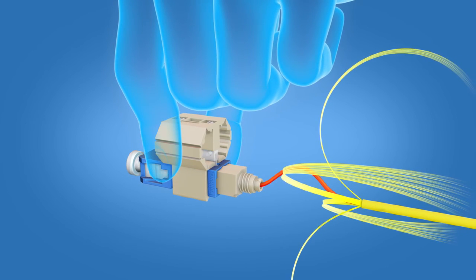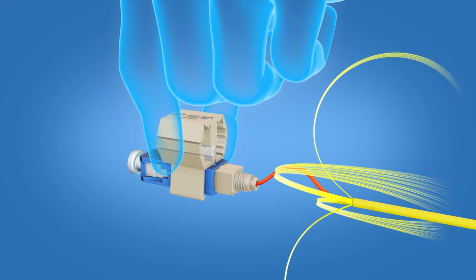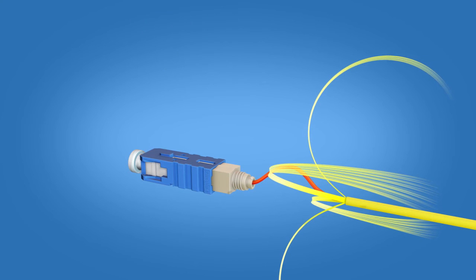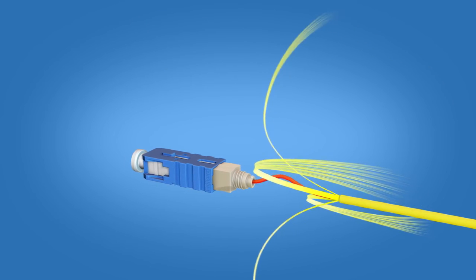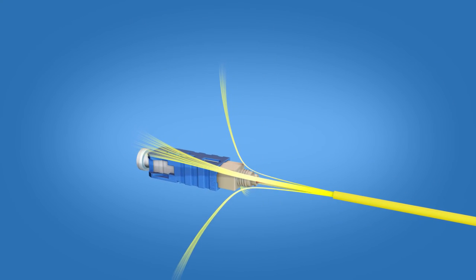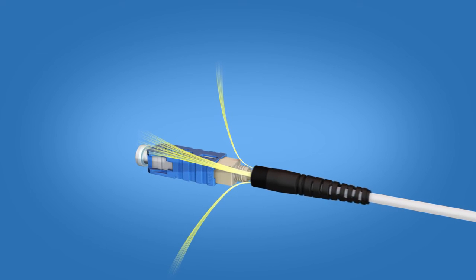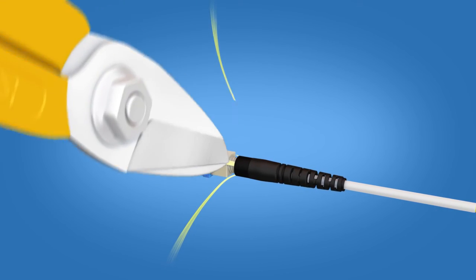Release the wedge clip by squeezing both sides and remove the wedge clip. Divide the Kevlar evenly on both sides and screw the boot on halfway. Trim excess Kevlar using the Kevlar scissors.